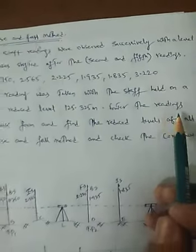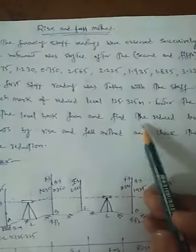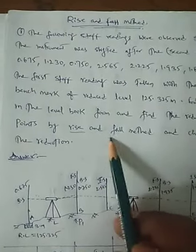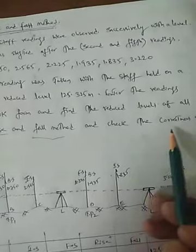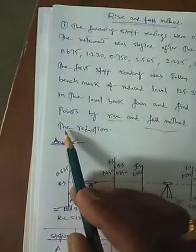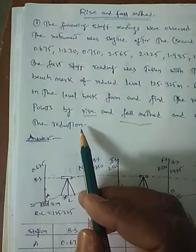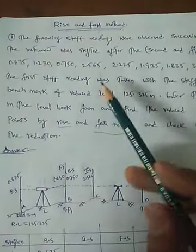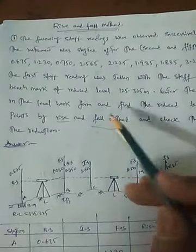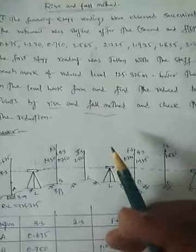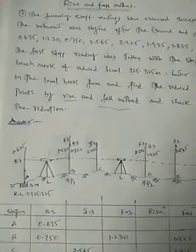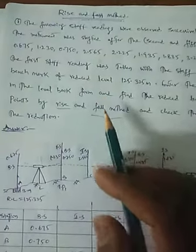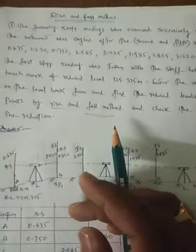Enter the readings in the level book form and find the reduced levels of all points by rise and fall method, and check the correctness of the reductions. This is the mathematical check we have to do. Now in this problem, the levels were given. First, how to identify which is backsight, which is intermediate sight, and which is foresight — you have to study the question properly to determine this.